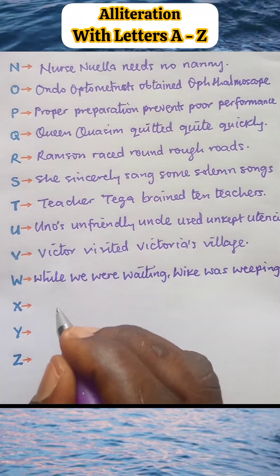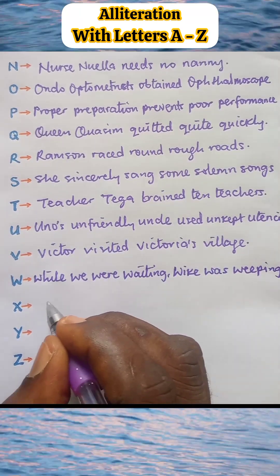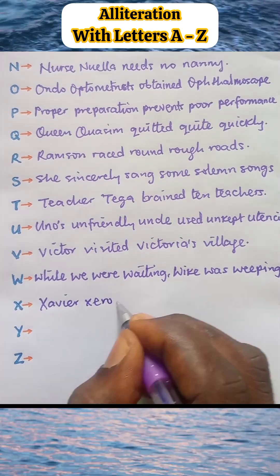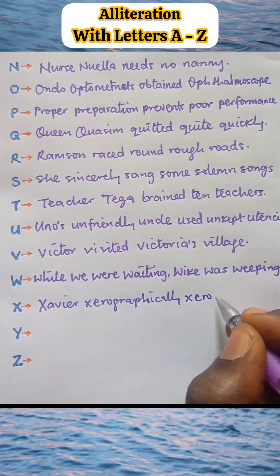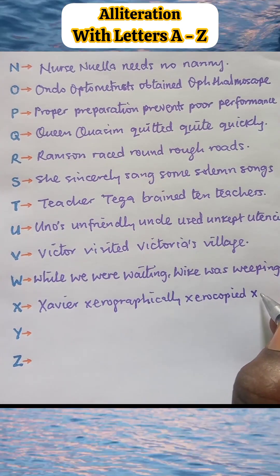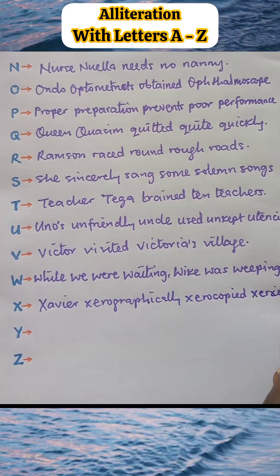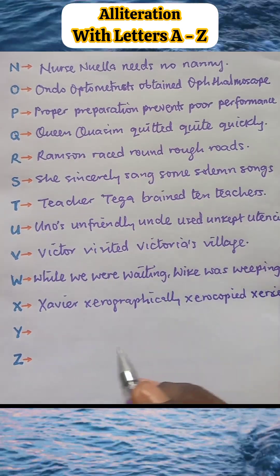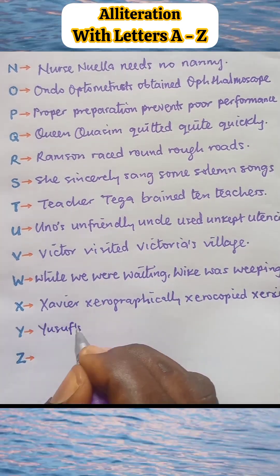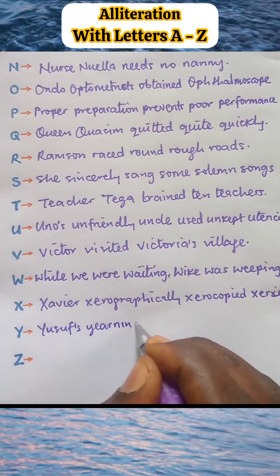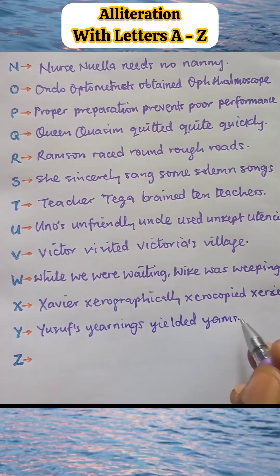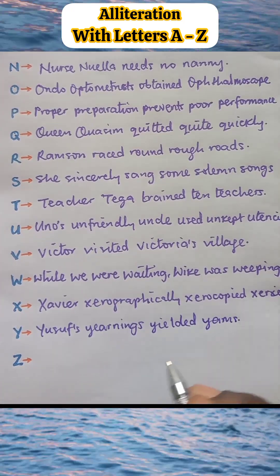Alliteration X: Xavier xerographically xeroxed. Alliteration Y: Yusuf's yearning yielded yams.